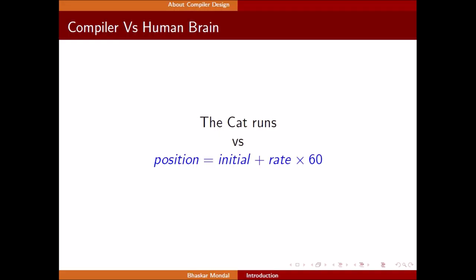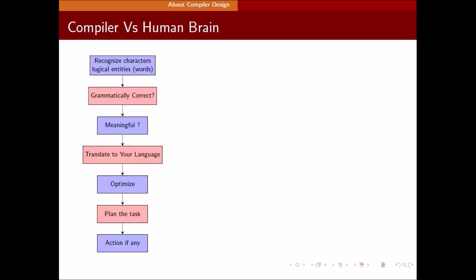In computer programming, we write simple instructions like position equals initial plus rate times 60. This is an instruction we usually write to calculate position for a given initial value.